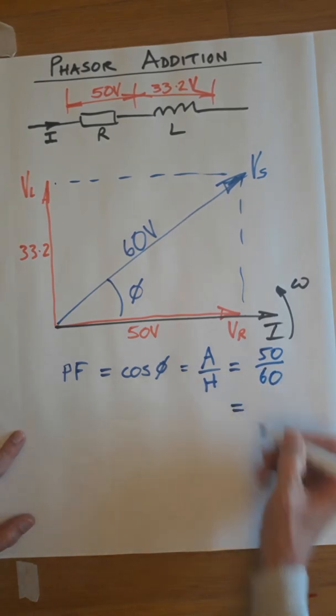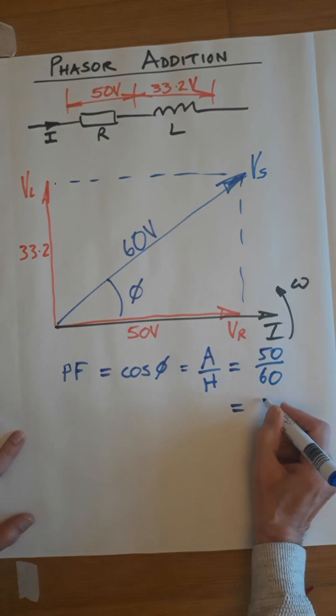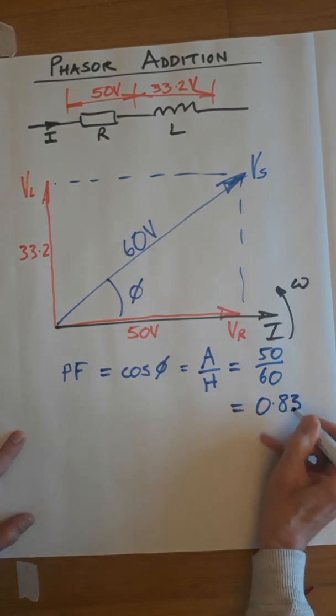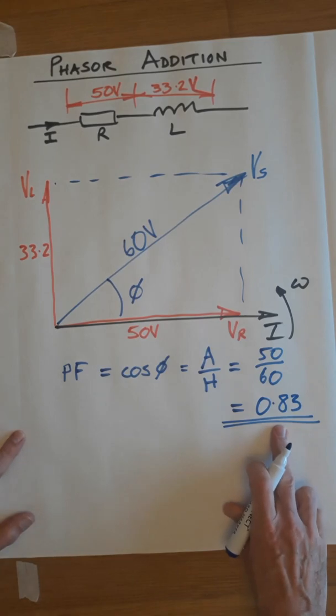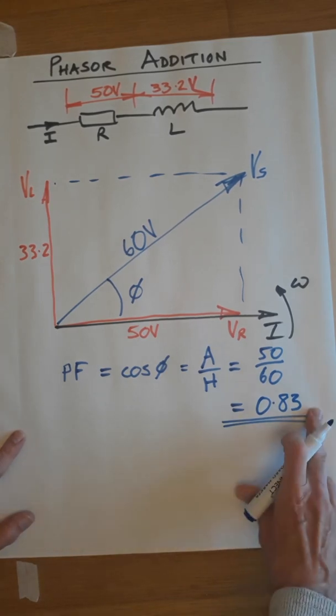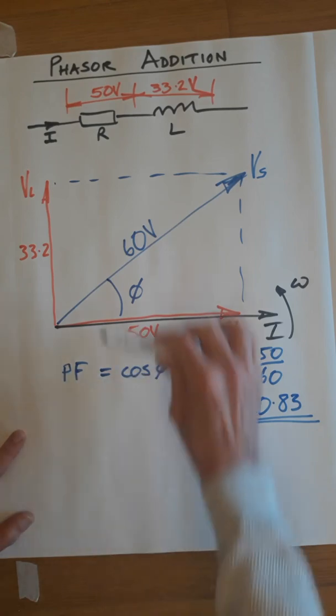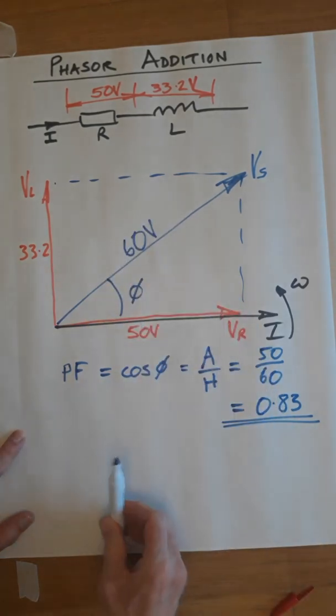Ran out of space a little bit there. But that's going to come to 0.83, which is fine. Power factor is a number between 0 and 1, and there are no units. So that's how we do the power factor, the adjacent over the hypotenuse.